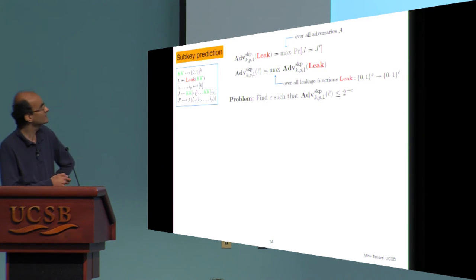Of course, the advantage will depend on the leakage function. So here what we do is say, well, what's the, from the adversary perspective, the best leakage function? So maximize over those, and you get, as a function of the number of bits L leaked, how many, or what the disadvantage looks like.